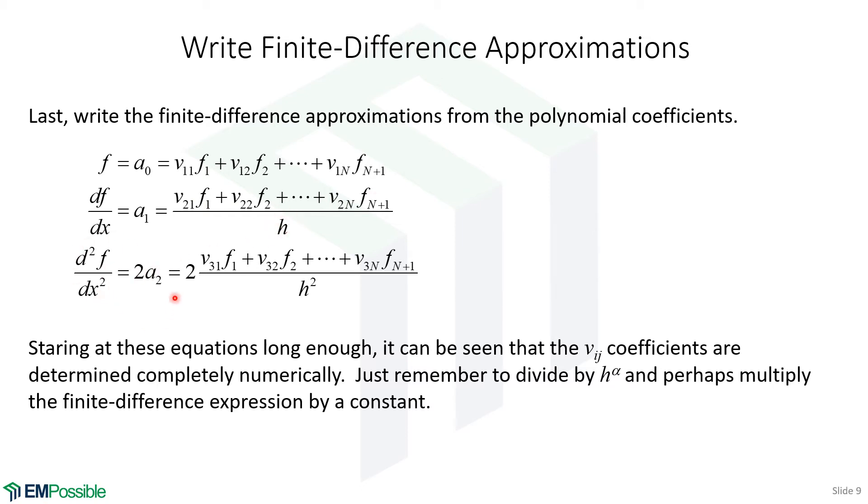For our second order derivative, basically the same thing happens, but we have to multiply by this factor of 2. That's an easy thing to forget. This was the third row in that V matrix, and we have to remember to divide by H squared and, of course, multiply by 2.